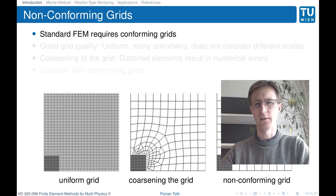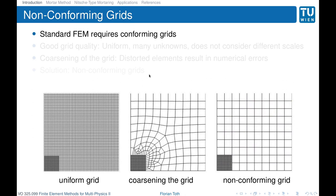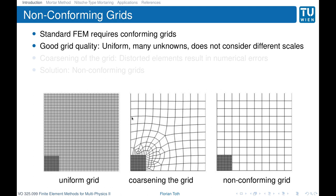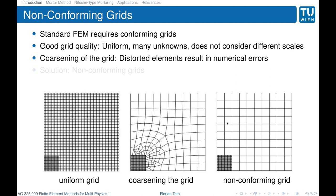What are non-conforming interfaces? In principle, for standard finite element methods we need conforming grids, like on the lower left side with a very fine grid. If we have some features we don't need to resolve with fine resolution, we can coarsen the grid, but this does not give us good grid quality. Our optimal solution would be to use non-conforming grids, as on the right-hand side, where we just glue the two domains together and satisfy the interface conditions in the correct way.